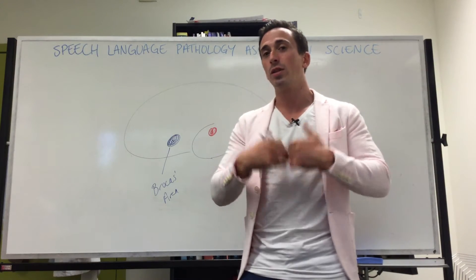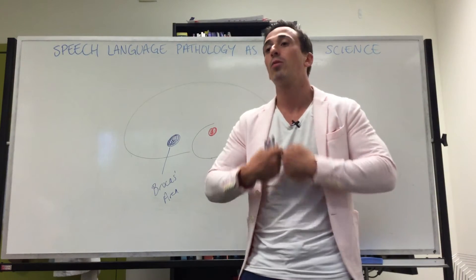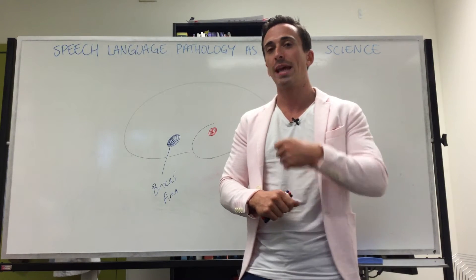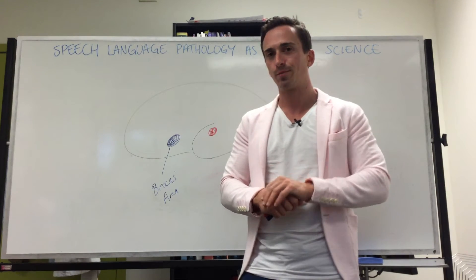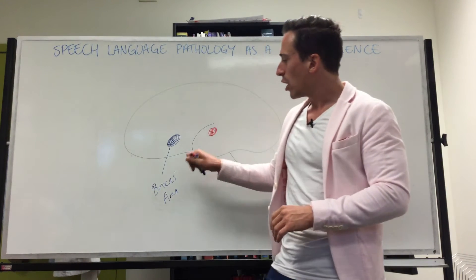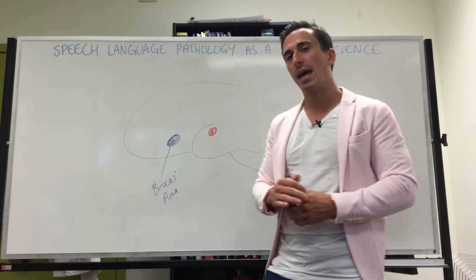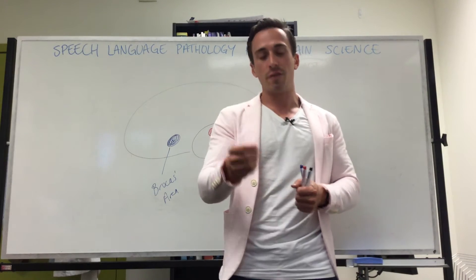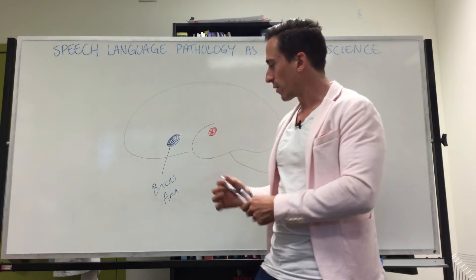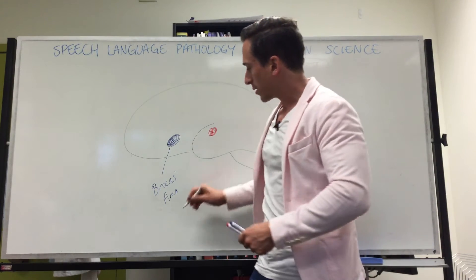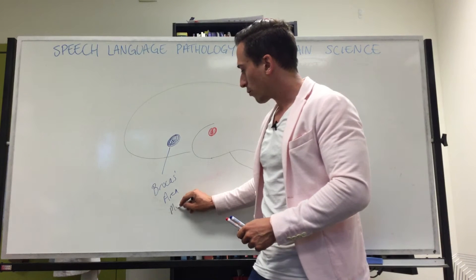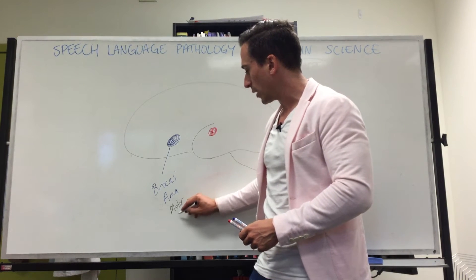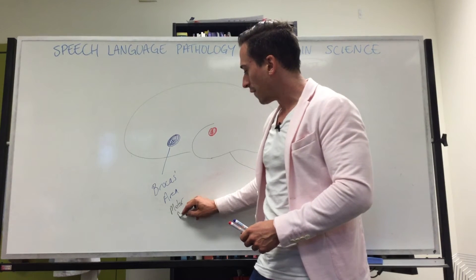Broca's area demonstrated that lesions or damage to this area produced a presentation of an inability or disorder with producing the motor aspects of language — so language production. This was also termed motor aphasia. So lesions to this area produced what was called predominantly motor aphasia.